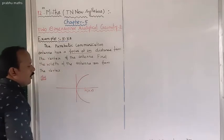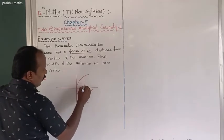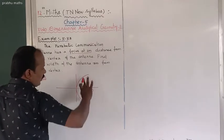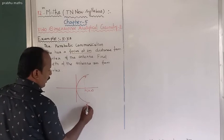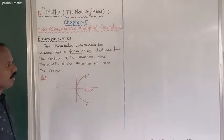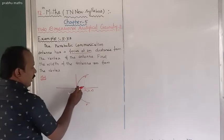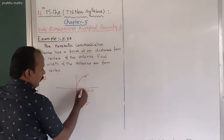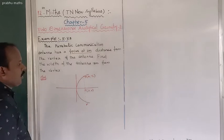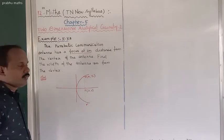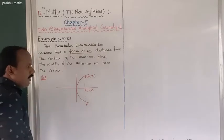The focus is at (2, 0). To find the width of the antenna, the width means this distance — from P to P dash. Given: width of the antenna 3 meters from the vertex. So 3 meters from the vertex means the point is (3, y1). Here x equals 3 and y equals y1.